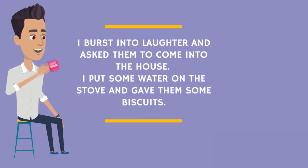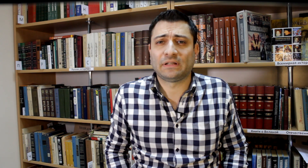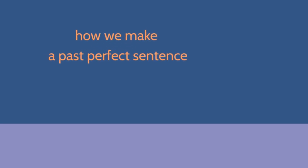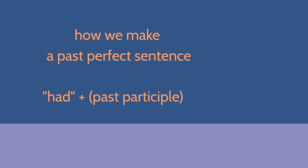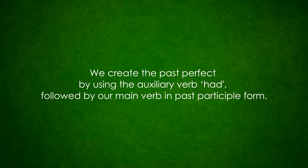So, the past perfect tense helps our story to unfold, and allows time to create suspense and drama. Let's talk about how to make a past perfect tense. We create the past perfect by using the auxiliary verb 'had', followed by our main verb in past participle form.